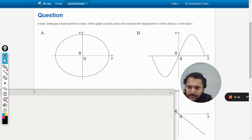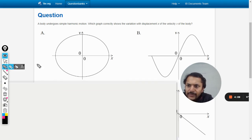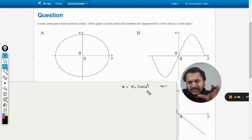First of all, let us take this X as X naught into cos omega t. Let us say this is given to us and we take this as the displacement function. So the velocity function here will be negative of X naught omega sine omega t.